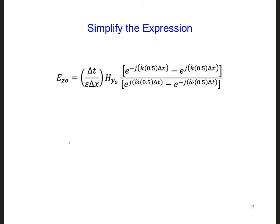And what we want to do next is we want to use an identity. Sine theta is equal to e to the j theta minus e to the minus j theta over 2j. And so we can apply this to both the numerator and the denominator. We're going to have the 2j's from both of those going to cancel each other.